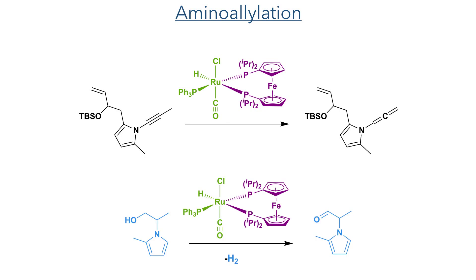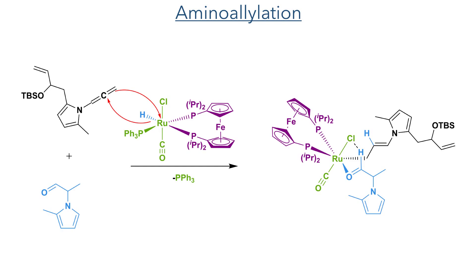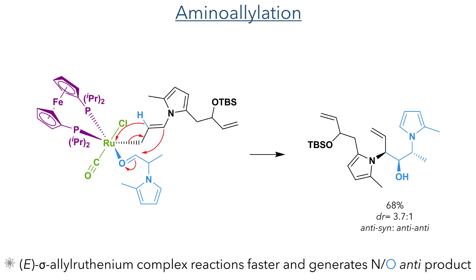It then reacts with the other coupling partner and oxidises the hydroxyl group to an aldehyde, together with the elimination of hydrogen gas. The catalyst can then add to the allene, forming a carbon-ruthenium bond together with the transfer of a hydride. The aldehyde can then displace the labile triphenylphosphine ligand, and this adopts a conformation where the hydrogen of the aldehyde group interacts with the halide found in the axial position of the ruthenium complex. With both substrates now bound to the catalyst, the addition can occur.